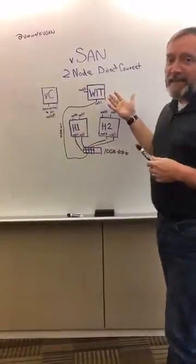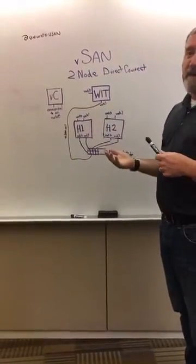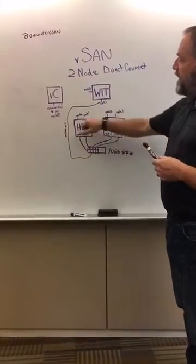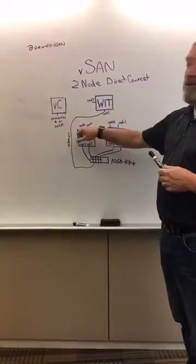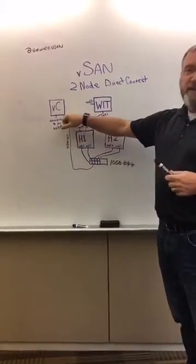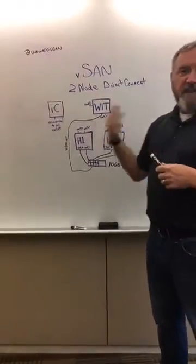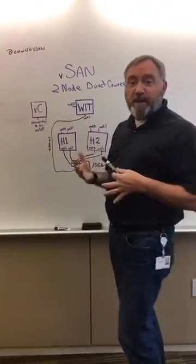If you'll notice here I've got a depiction of vSAN two node direct connect before 6.5 where we have our two hosts here. For the purpose of simplicity, I didn't connect my vMk0 management NIC over to vCenter but I have it listed here. Got my witness running somewhere else, vCloud Air maybe, maybe in a vCloud Air network partner or something of that nature.